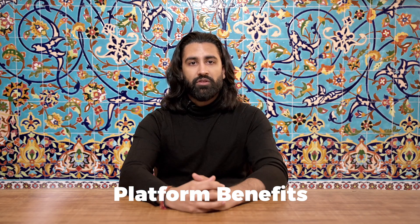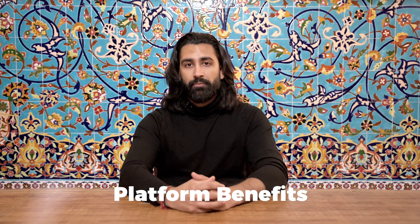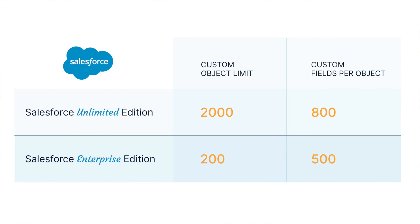Now let's explore the platform benefits of Salesforce Unlimited, specifically key metadata and data storage limits. Salesforce Unlimited is well suited for complex organizations with multiple business units, providing higher limits compared to the Enterprise edition. In particular, there's a 2,000 custom object limit for the Unlimited edition versus 200 for the Enterprise edition, and an 800 custom field per object limit for the Unlimited edition versus 500 for the Enterprise edition.